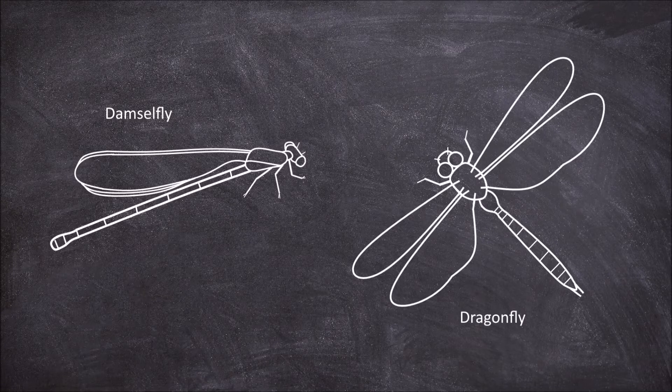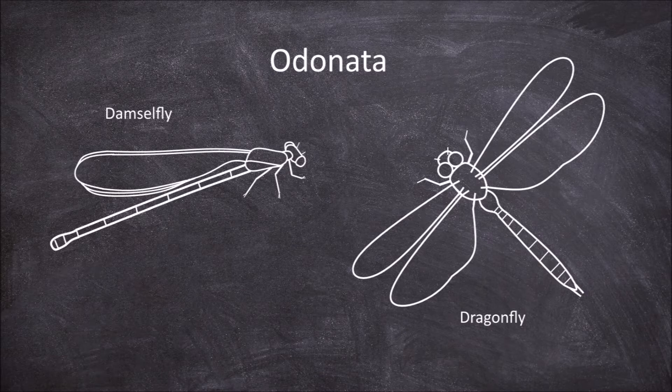Damselflies and dragonflies are similar looking insects that both belong to the order Odonata. Despite their similarity in appearance, both groups have several unique features both in their larval and adult forms.